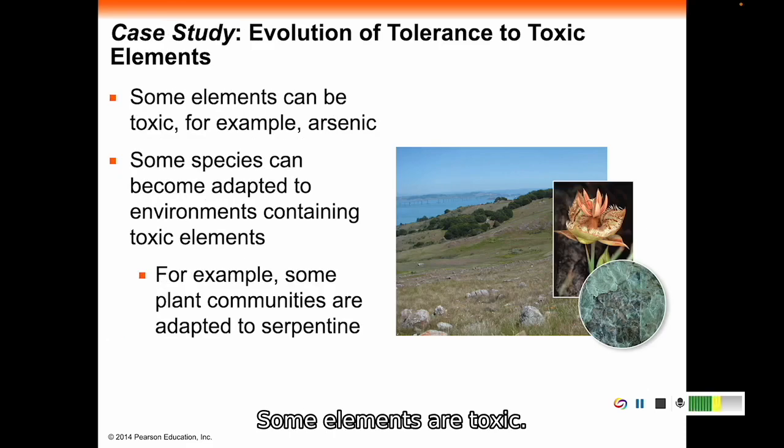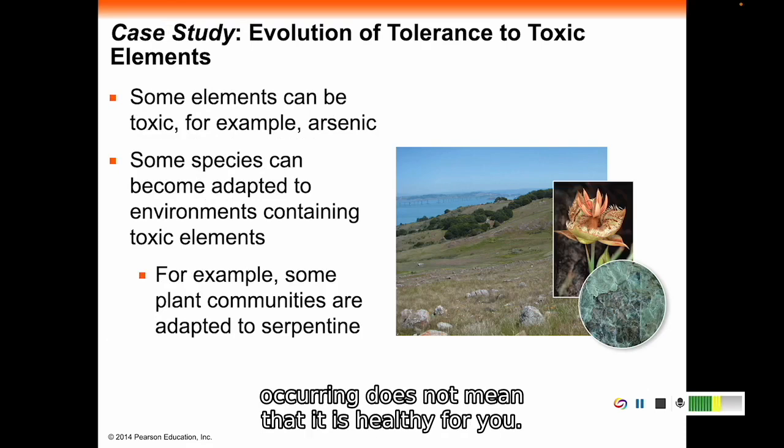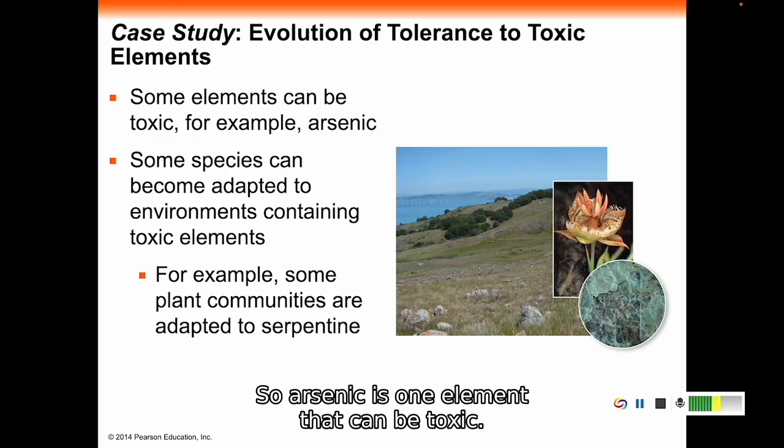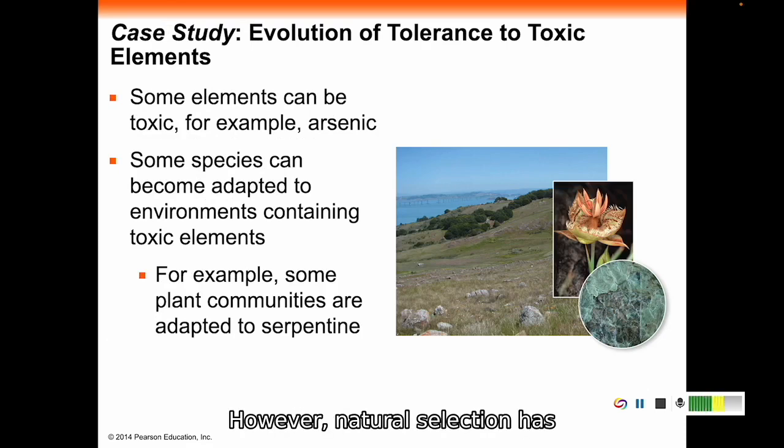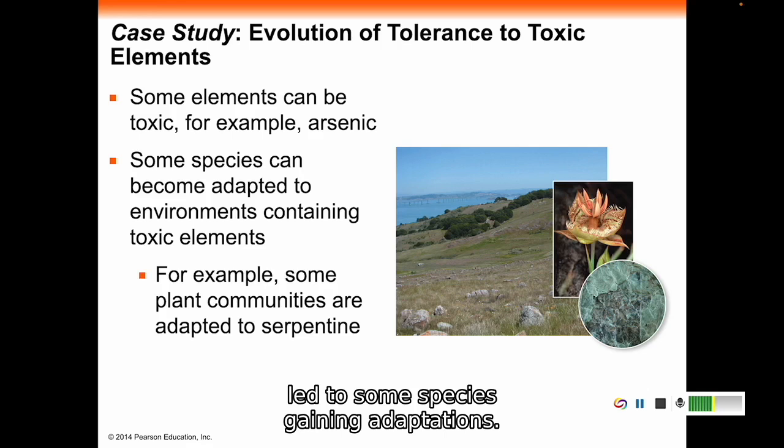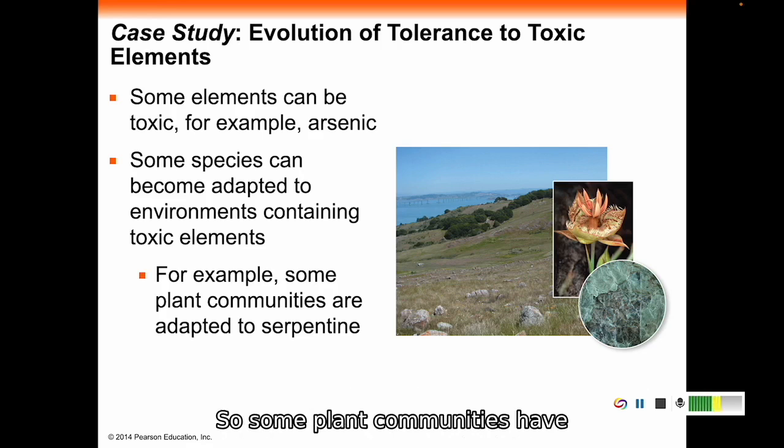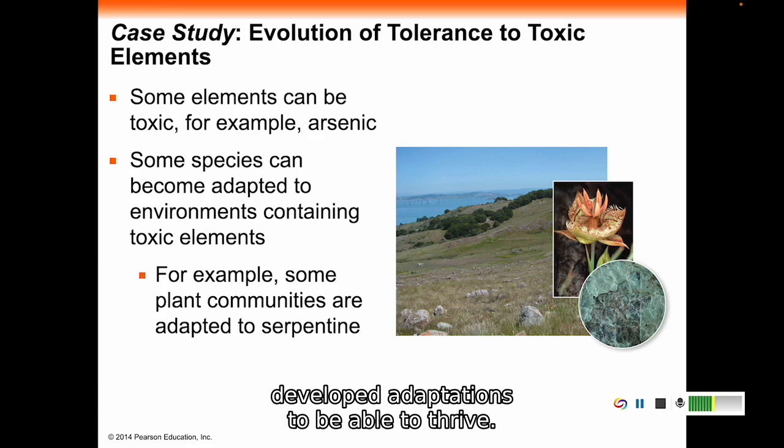Some elements are toxic. Just because something is naturally occurring does not mean that it is healthy for you. Arsenic is one element that can be toxic. However, natural selection has led to some species gaining adaptations to environments that have toxic elements. Some plant communities have developed adaptations to thrive in areas where there is serpentine.